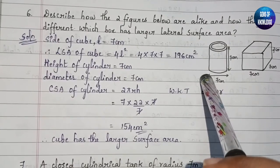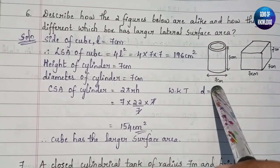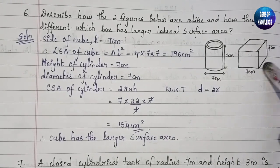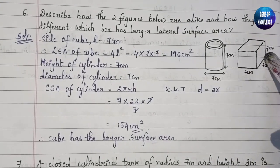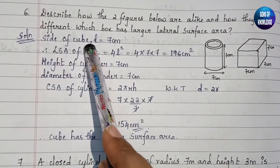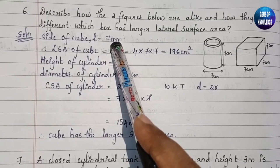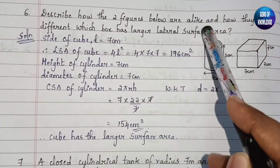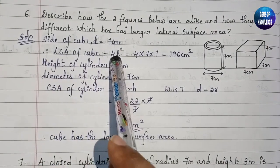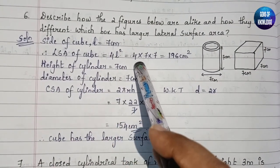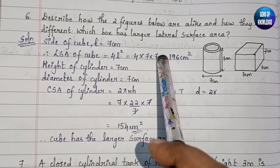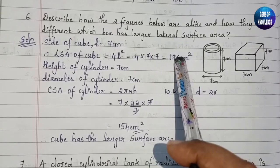The diameter of the cylinder is 7 cm and the height is 7 cm. For the cube, all sides — length, breadth, and height — are equal to 7 cm, so side l = 7 cm. According to the formula, LSA of cube = 4l². Substituting: 4 × 7 × 7.